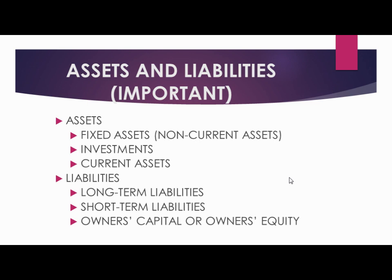Within assets, if we classify further, first comes fixed assets, also called non-current assets. Current means assets which can be utilized within a small period, mostly a financial year. Assets held for longer than that are called fixed assets. Common examples include land, property, copyrights, brands, investments, trademarks, and machinery — these are all fixed assets.